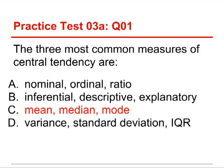Now, just a word about the other ones. A — nominal, ordinal, and ratio — those are three of the four levels of measurement. B — inferential, descriptive, and explanatory — those can be the purposes of statistics: an inferential statistic, a descriptive statistic, or an explanatory study. And then D — variance, standard deviation, and IQR, which stands for interquartile range — those are actually measures of spread, or variation. We'll talk about those in the next chapter.